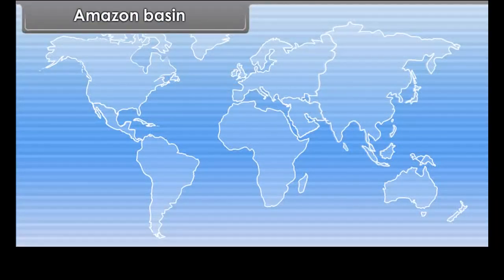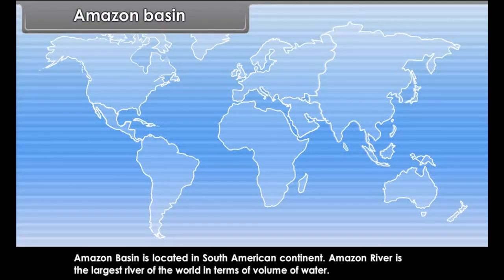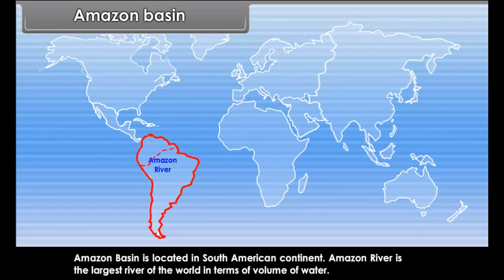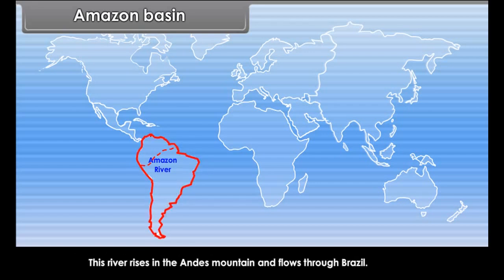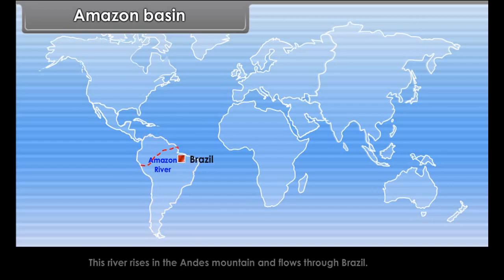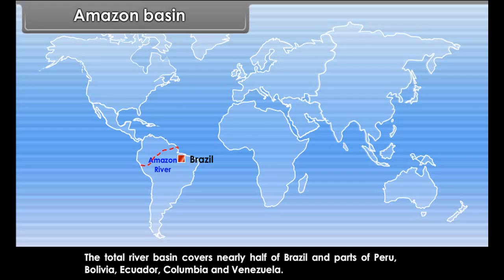The Amazon Basin is located in the South American continent. The Amazon River is the largest river of the world in terms of volume of water. This river rises in the Andes Mountain and flows through Brazil. The total river basin covers nearly half of Brazil and parts of Peru, Bolivia, Ecuador, Colombia, and Venezuela.